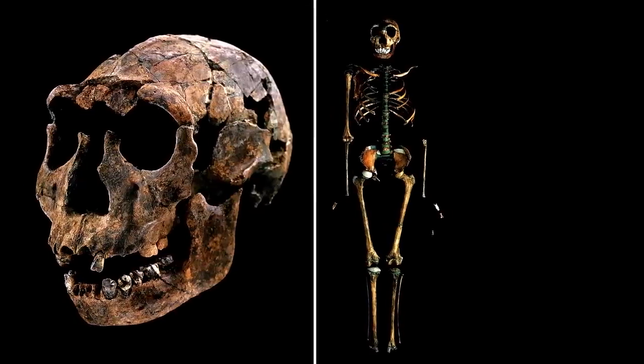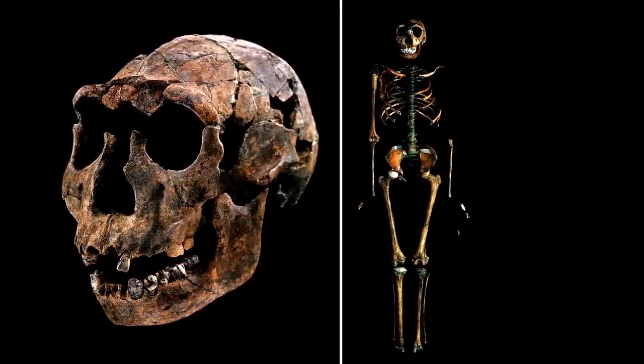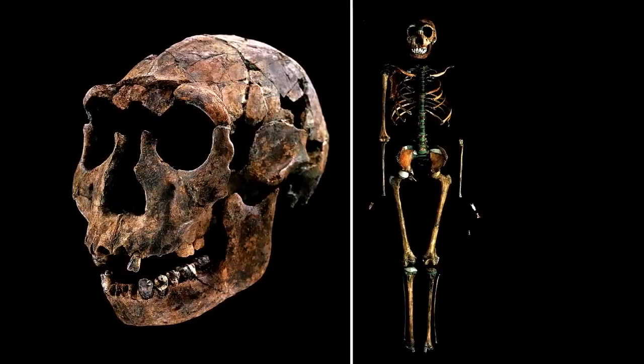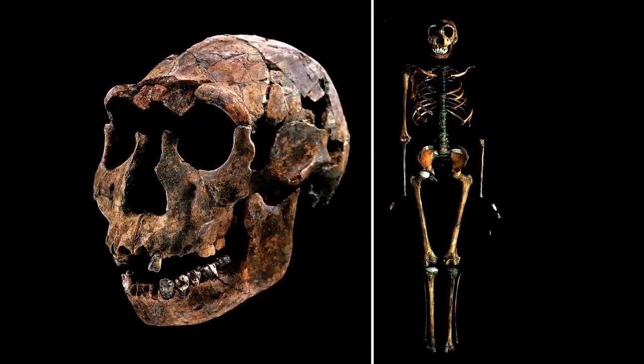In human children, this kind of handedness begins to emerge between seven and thirteen months of age and is well established by age three. Is this a trait that our hominin ancestors also possessed? How long has right-handedness outweighed left-handedness?